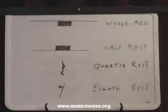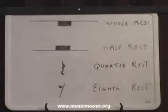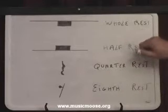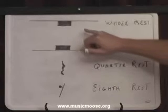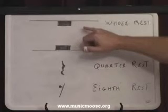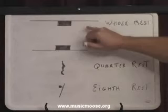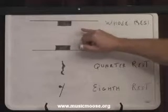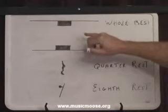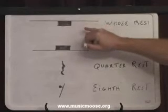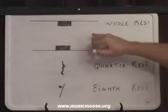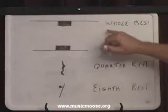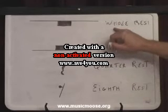Now we're going to look at rests in musical notation. We're going to start with the whole rest. You can see what the whole rest looks like here on the board. If you look on the staff of the musical notation, you'll see a little black box that's going to hang below the line of the staff. You can think about that hanging below the line as being heavy — it's hanging down beneath the line — and that's containing all four beats.